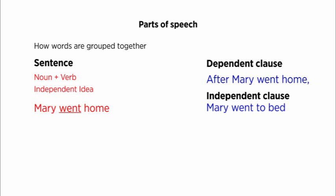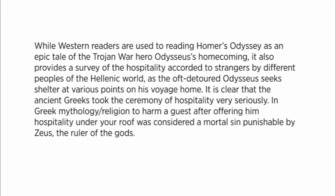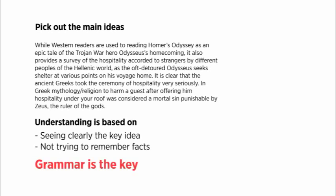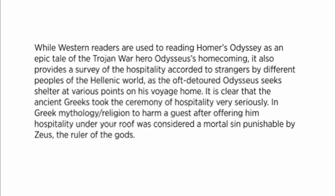Knowing these kinds of distinctions is very important for the MCAT test. So let's take a look at a passage from the Exam Crackers 101 Passages in MCAT Verbal and see how this works. When you read this, please take your time and see if you can pick out the main ideas — you might even want to write them down. Most students when they see a passage like this will go through it painstakingly trying to figure out what it is saying and remember as many facts as possible. This is both a slow and very confusing process. Cognition, or understanding, is based on seeing clearly the key idea and how the different parts of the sentence relate to each other — not trying to remember facts. And grammar allows you to do just that.